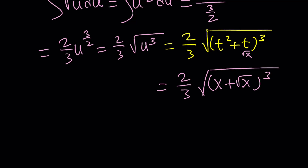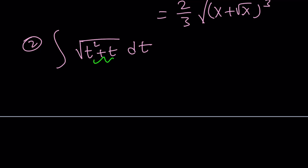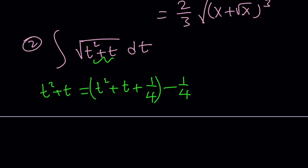Now comes the harder part. The second integral is the integral of the square root of t² + t. There are a couple of ways to approach it; I'm going to use the trigonometric approach. First, complete the square: t² + t can be written as (t + ½)² − ¼, since adding and subtracting 1/4 gives a perfect square.